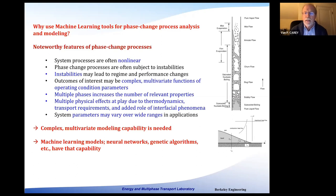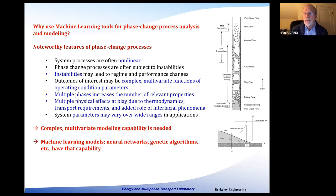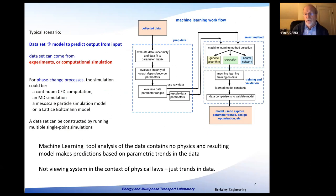There are typically at least two phases present, which increases the number of relevant physical properties — both for the liquid and vapor phases. There's also interfacial phenomena: interfacial tension and wetting characteristics are typically factors that enter in. Multiple physical effects come into play due to thermodynamic requirements, transport requirements, and interfacial boundary conditions. We may also have a wide range of operating conditions, so you want a model that can function accurately over broad parameter ranges. Machine learning models — particularly neural networks and genetic algorithms — have this multivariate modeling capability and are therefore attractive options.